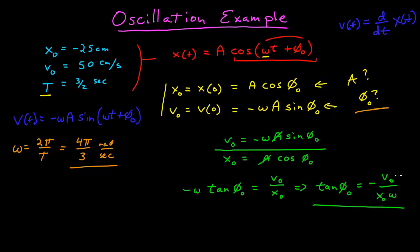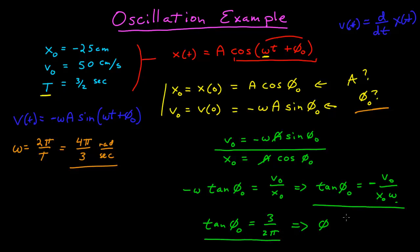I know the initial velocity and position, so I can calculate that. Putting in 25 centimeters over 50 centimeters per second, with omega in radians per second, I get tangent of phi naught equals 3 over 2π. Putting this into my calculator, this gives me a phi naught of 25.52 degrees — I'll keep it in degrees for now.